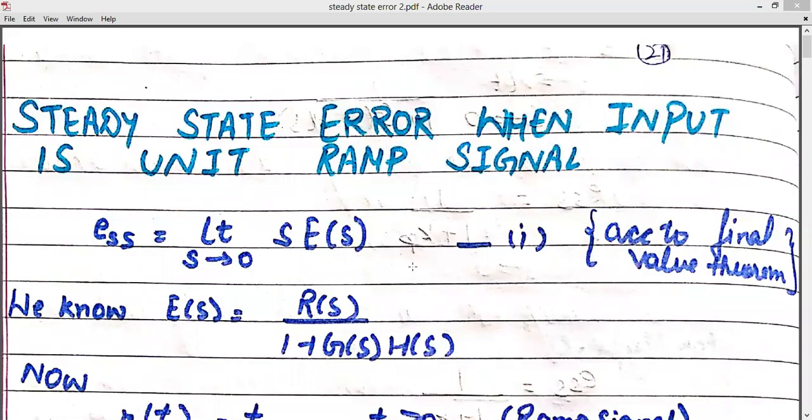Hello students! Today we are going to start the second part of the steady state error. As I have already given the video of Part 1, please watch that video before watching this video. In this video we are proceeding with the next signal which is the unit ramp signal, and the procedure will be the same. Now let us see how we have to implement this.